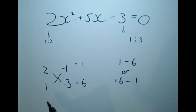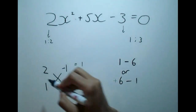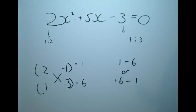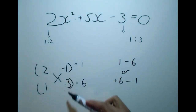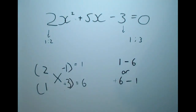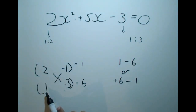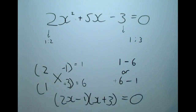We have found our combination that works. Now we will see why we use cross multiplication — because these actually become our brackets. This is the x column and this is the regular number column. So our two brackets are 2x minus 1 and x plus 3. We end up with (2x minus 1)(x plus 3) equals 0, and that is its fully factorized form.